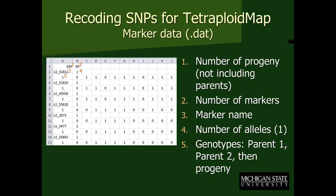When bringing in the marker data, there are some formatting requirements. The data begins with the number of progeny being put into the project — in this instance, 184, which does not include the two parents, for a total of 186 genotype calls being incorporated. Then the number of markers being put into the project — here there are 46. This was looking at one parent, Premier Russet, for a single chromosome, chromosome 1. We had broken these out to work at a single chromosome per parent at a time in Tetraploid Map so that when we reached the marker ordering stage, we would be under the limit. Next is the marker name, the number of alleles to expect — in this case 1 — and then the actual genotypic calls for parent 1, parent 2, and then the progeny.